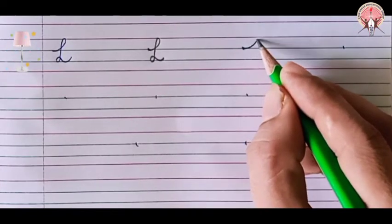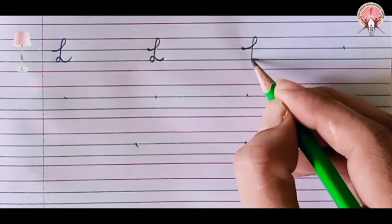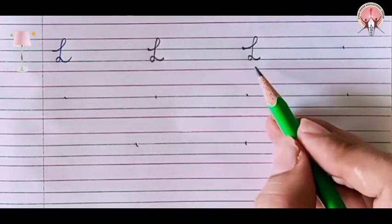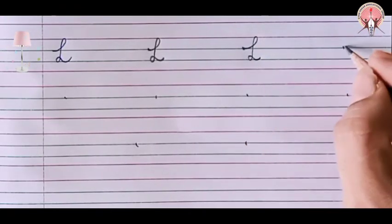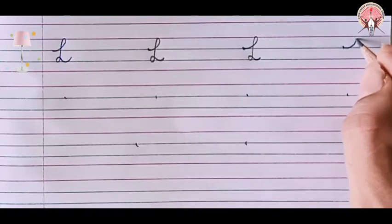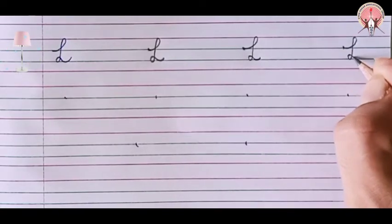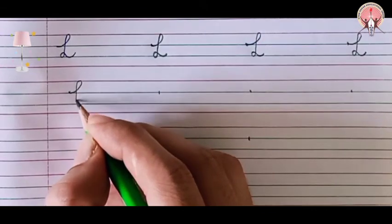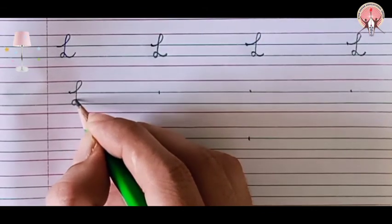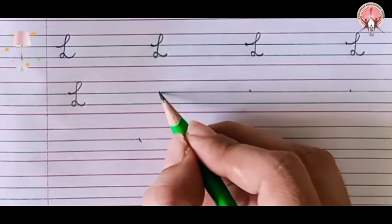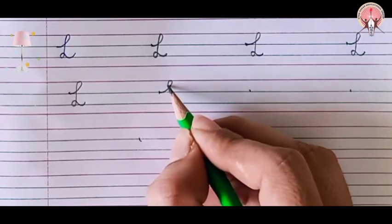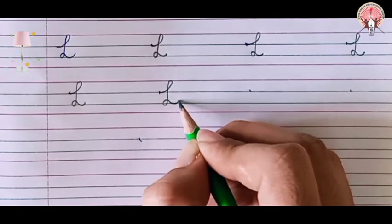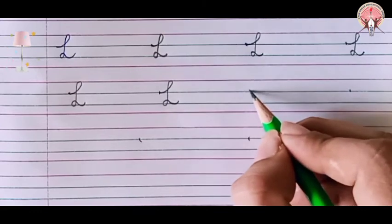Go up. Come down. Capital cursive L. Go up. Come down. And turn. Go up. Come down. And turn. Go up. Come down with the curve. And turn. Capital cursive L.